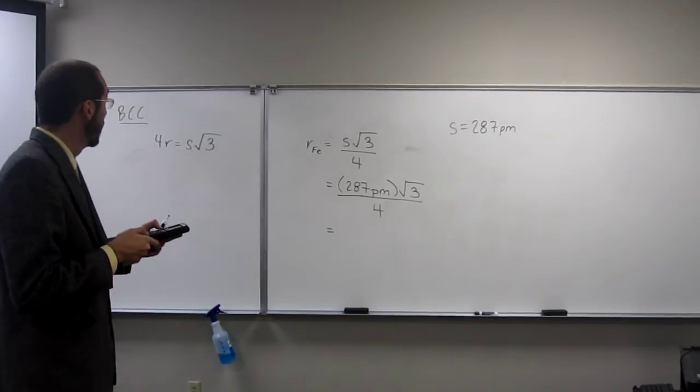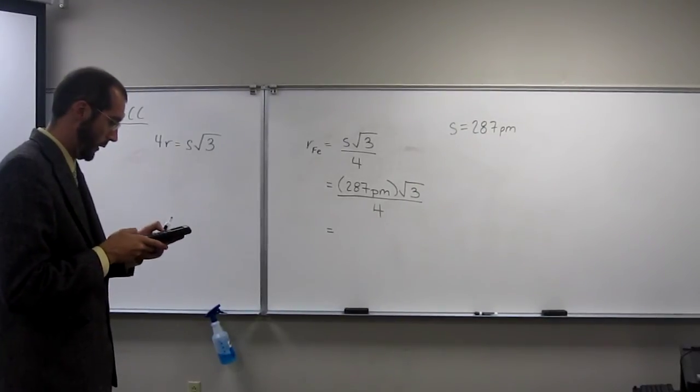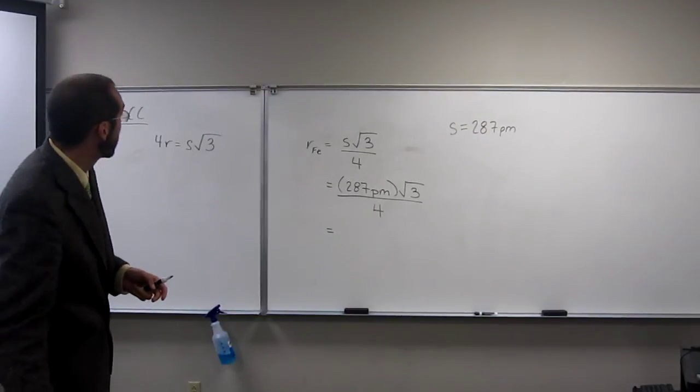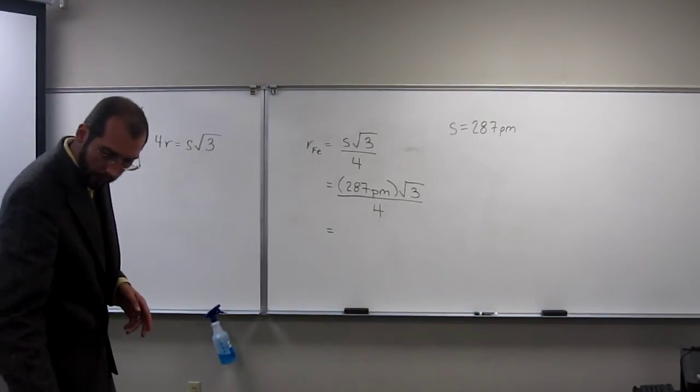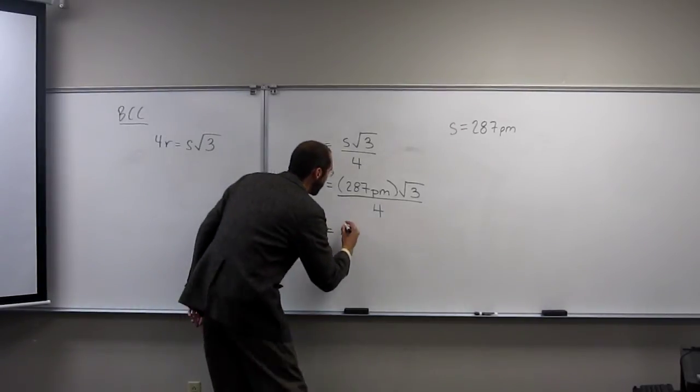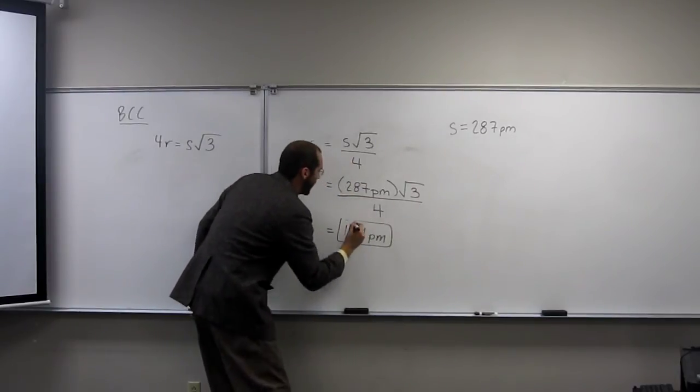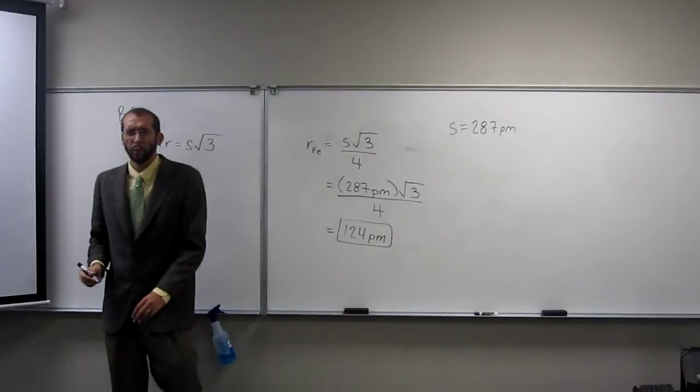So it says 287 times square root of 3 divided by 4, so 124 picometers. That's a reasonable number if you're getting somewhere around that.